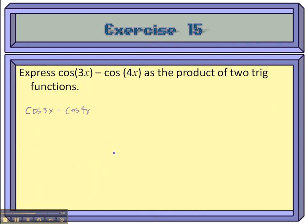So this should be equal to negative 2 times the sine of 3x plus 4x over 2 times the sine of 3x minus 4x over 2.